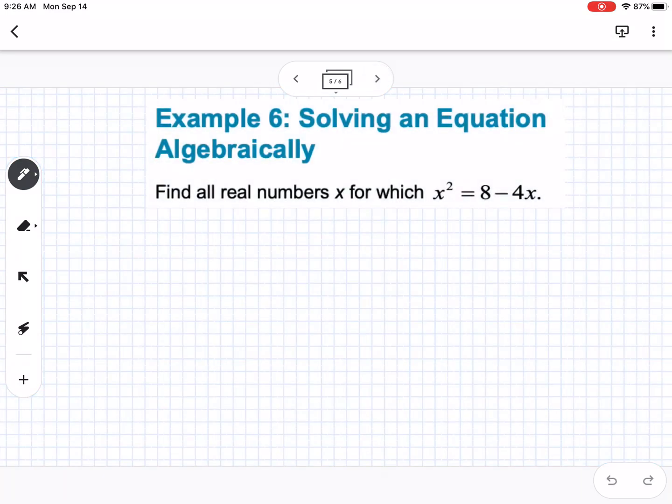Okay, here's our next example. We are looking at an algebraic model for this one. So it says, solving an equation algebraically. So find all real numbers for x, which x squared equals 8 minus 4x. So the first thing I would always do with these is try to factor it, because factoring is always going to be the easiest. So I'm going to get this all onto the same side. So this would be x squared plus 4x minus 8 equals 0.